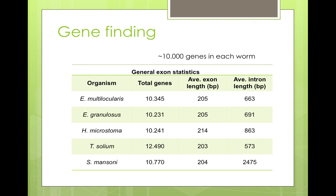When we did gene finding, we found that there are around 10,000 genes in each species of tapeworm. For Echinococcus multilocularis, we've been trying to make sure that these gene models are of as high quality as possible. With support of RNA-seq and similarity, we have manually curated more than half of these genes.